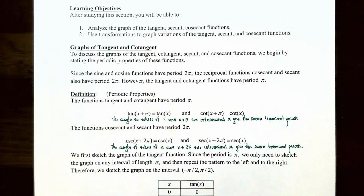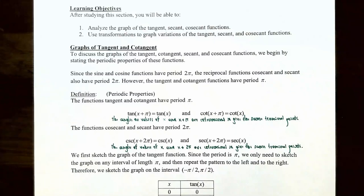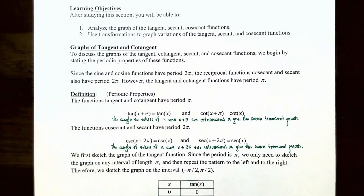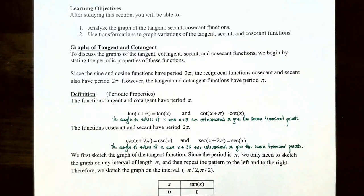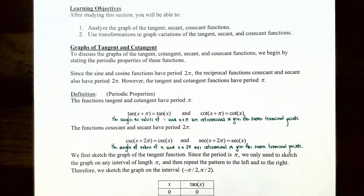The tangent and cotangent functions have a period of π. The definition of periodic properties states that tangent and cotangent have a period of π, meaning tangent(x + π) = tangent(x). If you add π inside the argument of the tangent function, it will produce the same output value. Similarly, cotangent(x + π) = cotangent(x) because the period of the cotangent function is also π radians. The values of x and x + π are coterminal and give the same terminal points, so the tangent and cotangent output values are the same.